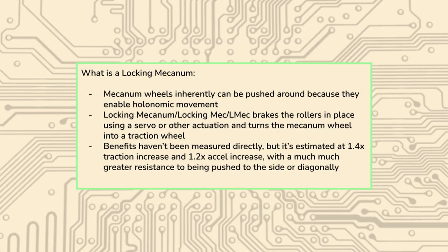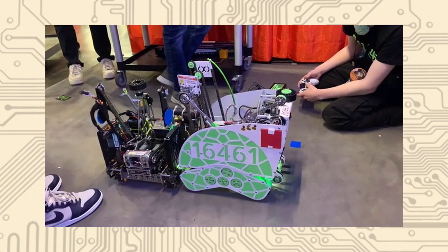So Locking Mecanum is saying we're going to use some sort of actuation and we're going to brake all of the rollers in place, make them stationary, turn the Mecanum wheel into a traction wheel, and get all the benefits from that.